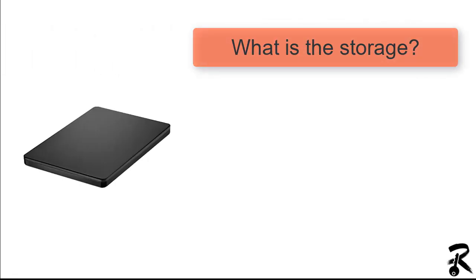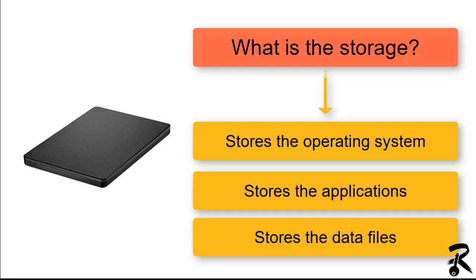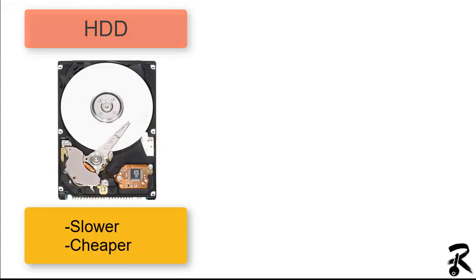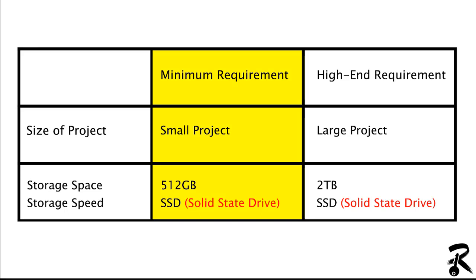I recommend for a small project to go for 16 GB of RAM, and for a larger project to go for 32 GB or more. For storage, it is the location that holds the operating system, applications, and data files. There are two types: HDD, which is slower and cheaper, and SSD (Solid State Drive), which is high-speed and more expensive. For a small project, get 512 GB of storage space with SSD speed. For a larger project, get 2 TB of storage space, also with SSD.